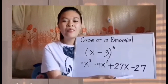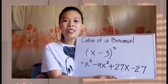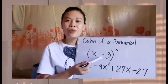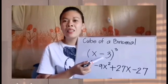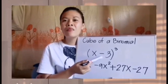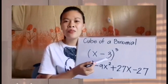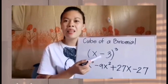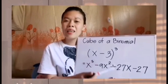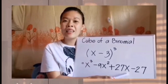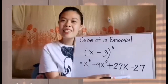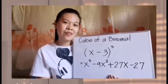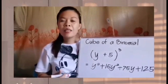Next, we will have negative 27 for the last step. We just have to get the cube of the second term. So negative 3 times negative 3 times negative 3 equals negative 27. Very easy, right?